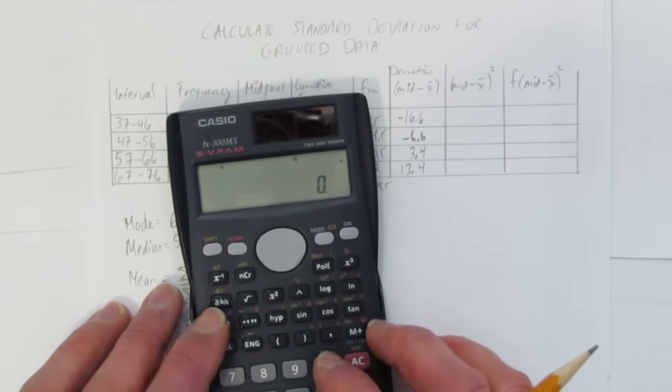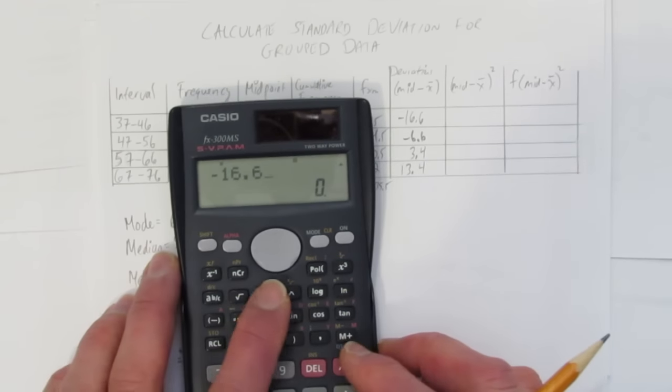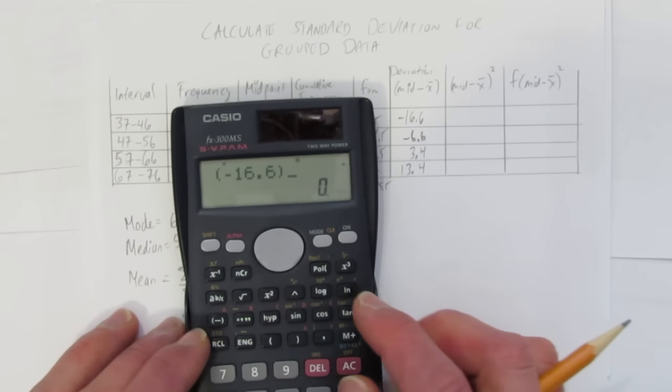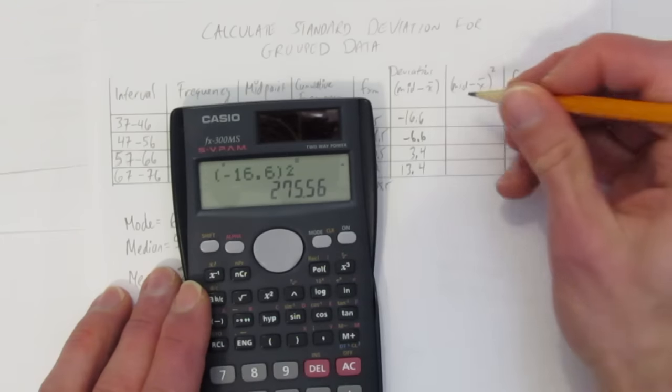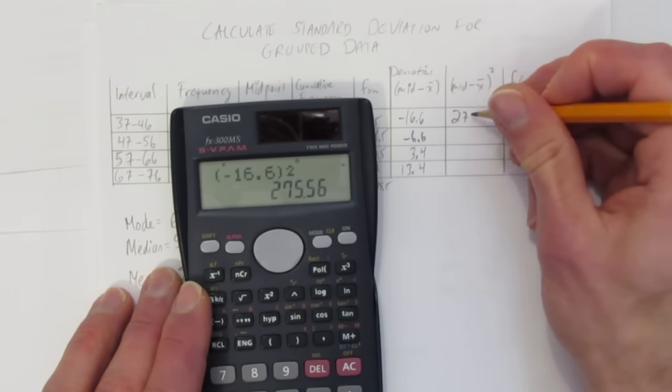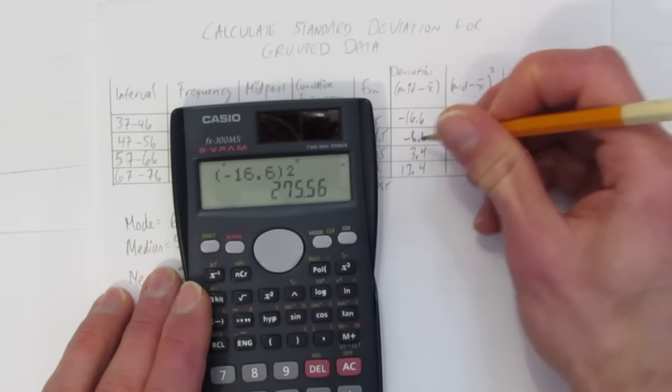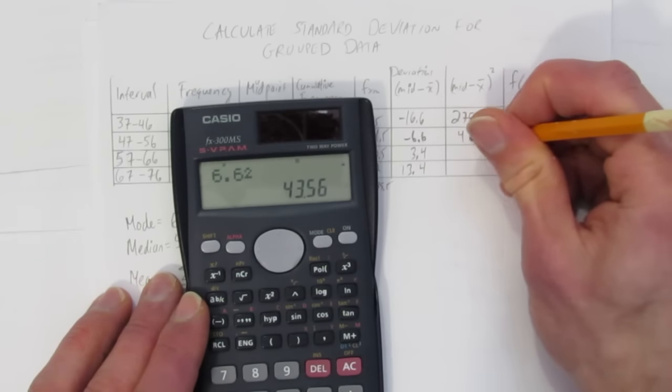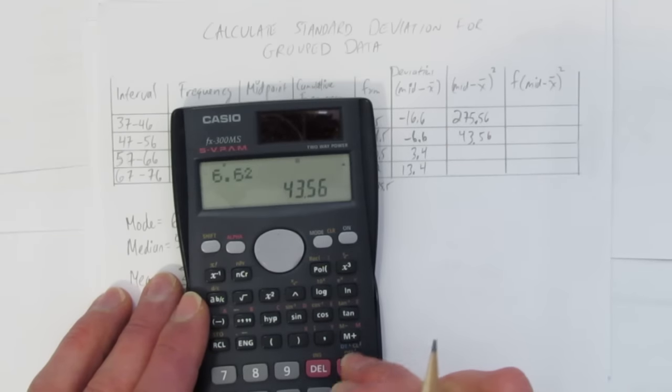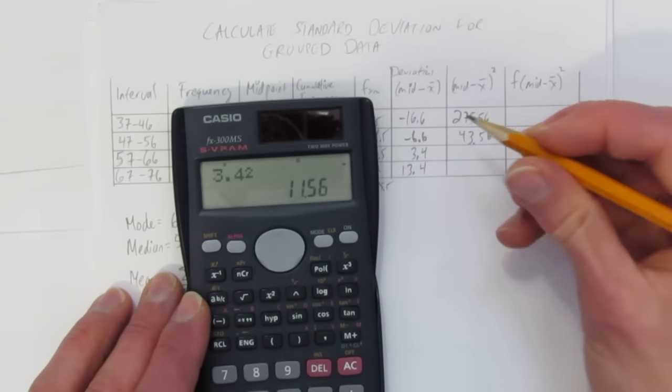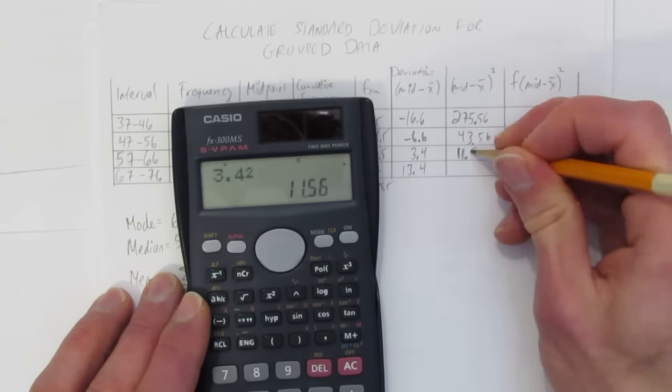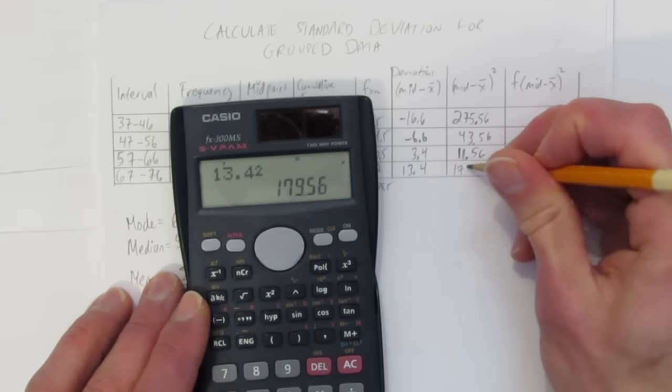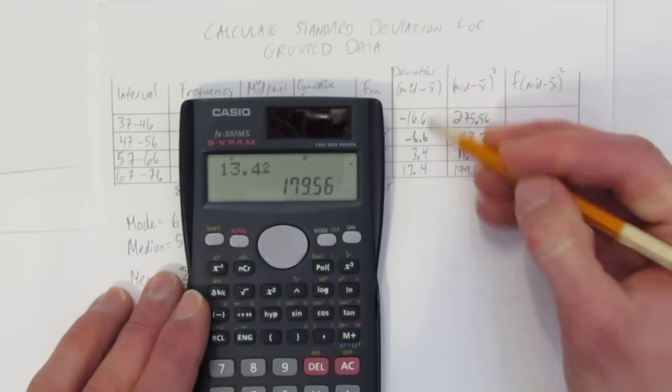Now we'll square them all. So negative 16.6 squared. Need a bracket around there. Negative 16.6 squared, because squaring a negative makes it positive. And knowing that, you can even leave out the negative. I'm going to do that on the next one. I know when I square, I'm going to get rid of the negative because negative times the negative is positive. So 6.6 squared is 43.56. Next one, 3.4 squared, 11.56. And then 13.4 squared, 179.56. Okay. Took my deviations, squared them.